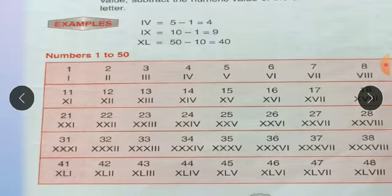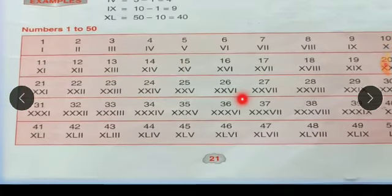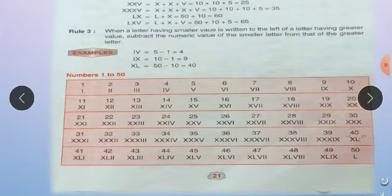Next, you can see the table of 1 to 50 Roman numerals with their number equivalents. Just practice 1 to 50 numbers and learn how to write them in Roman numerals — that is what we are learning in this chapter. Today, take your classwork and start the third lesson.